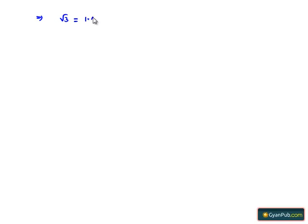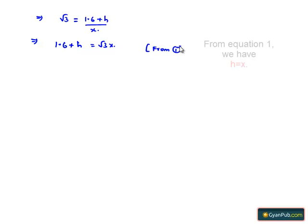That implies tan(60°), whose value is √3, equals (1.6 + H) divided by X. That implies 1.6 + H = √3·X. But from equation 1 we have H = X, which implies 1.6 + H = √3·H.